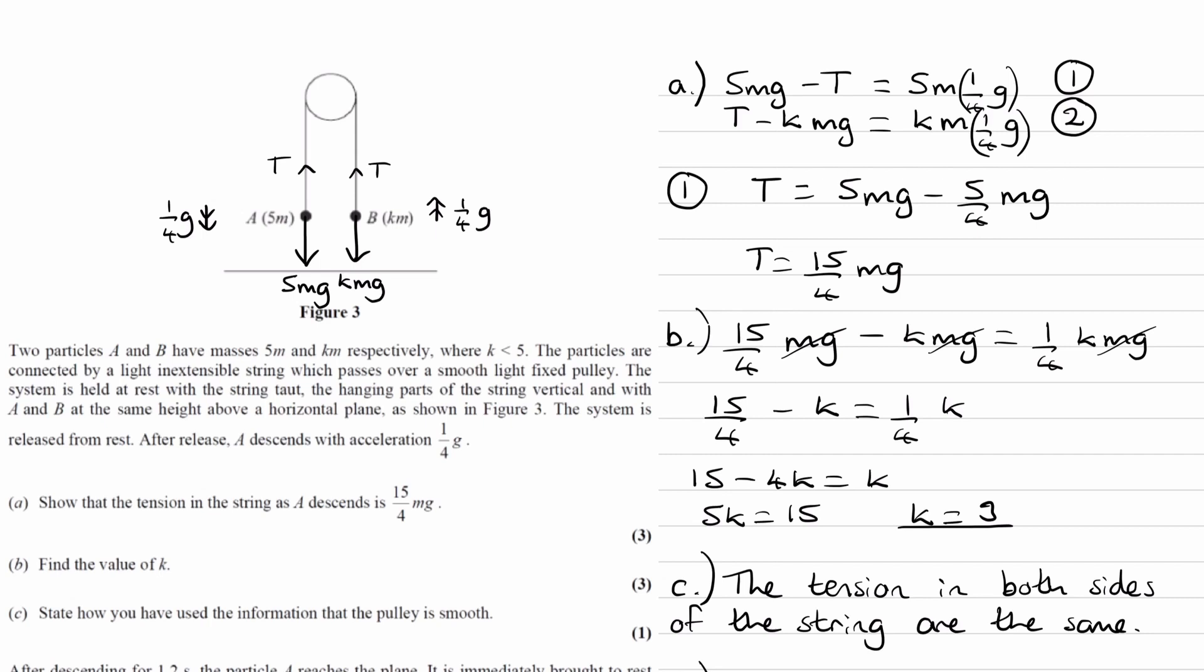So the reason we have to split it up into two stages is because we have different accelerations. Suvat equations can only be used when you have uniform acceleration. Our acceleration changes. It's 1/4 g to begin with. And then for object B, it'll be 9.8.